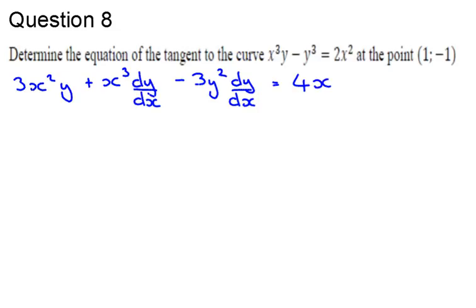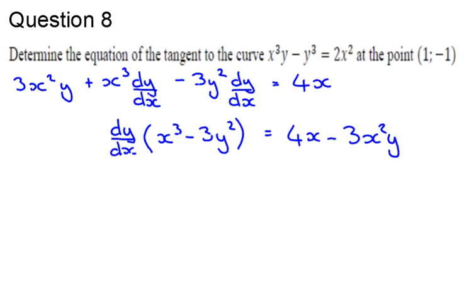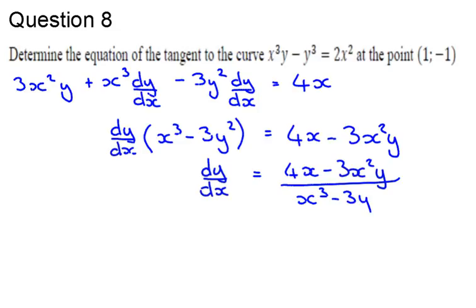Now, I want to group all the terms that have the derivative of y with respect to x together, and take out a common factor, which I can do easily in one step. So, I've got the derivative of y with respect to x. And I've got, in my brackets, x cubed minus 3y squared. Then, obviously, that 3x squared y can be subtracted from both sides. Now, I want the derivative of y with respect to x as the subject of my formula. So, I'm going to divide. So, I've got 4x minus 3x squared y, divided by x cubed minus 3y squared.